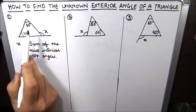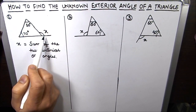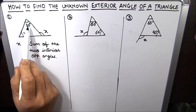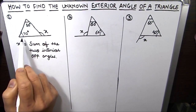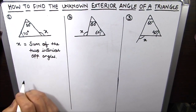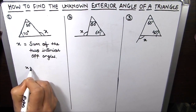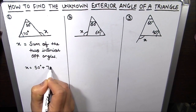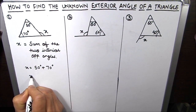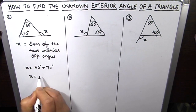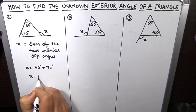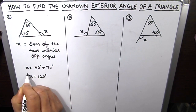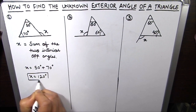Here we have been given an exterior angle x and we have also been given the two interior angles. So x is equal to 50 degrees plus 70 degrees. So x is equal to 120 degrees. This is our final answer here.